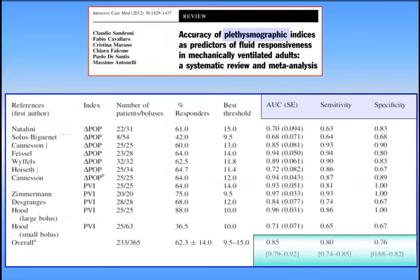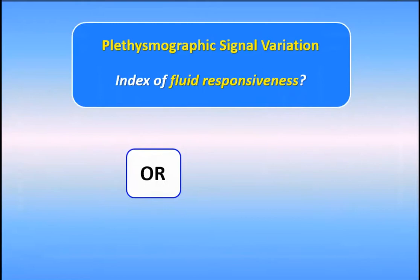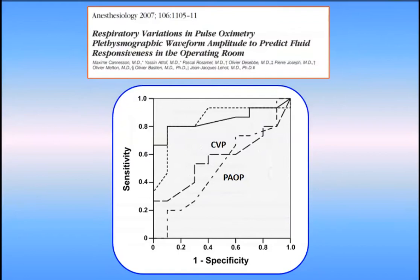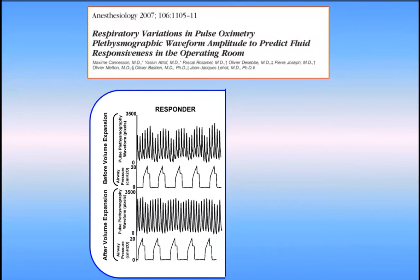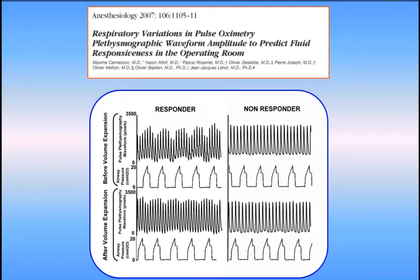I want to distinguish two situations: the operating room setting and the ICU setting. In the OR setting, there are good results in papers comparing prediction of fluid responsiveness using plethysmographic signal variability — delta POP compared to PPV performs the same for predicting fluid responsiveness and far better than CVP. In a typical responder, before giving fluids you see a variable waveform; after receiving fluids, the variation of the plethysmographic signal is attenuated. In a non-responder, there is no change before or after fluid infusion.